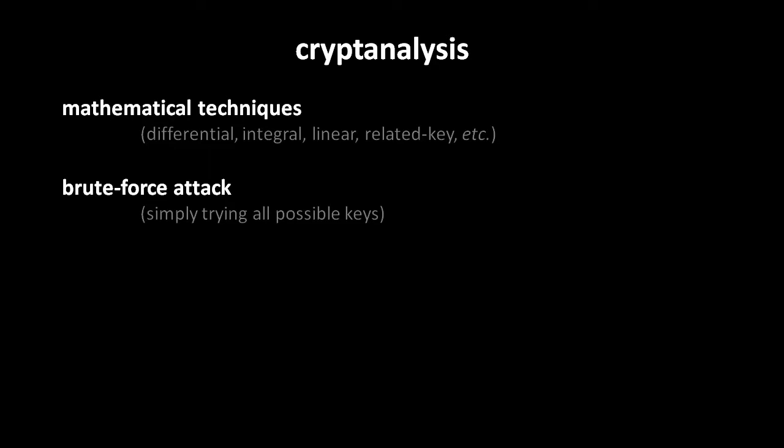For encryption systems thought to still be secure, we don't really worry about brute force attacks. For a system with a weakness, however, that means there's some mathematical technique which allows us to cut down the key space that has to be searched, thereby possibly making brute force attacks feasible. For example, if a technique were discovered to cut down the effective key space from a 128-bit space down to a 64-bit space — and remember, we're dealing in powers of 2, so that means cutting the key space in half 64 times — 2 to the 64th power is a much, much smaller number than 2 to the 128th. If an exploit cut the key space from 2 to the 128th to 2 to the 64th, a brute force attack on the remaining key space becomes feasible. Mathematical techniques don't necessarily discover the one true answer directly — they rather cut down the size of the key space to be searched, and then a brute force attack on the remaining space finds the actual key.